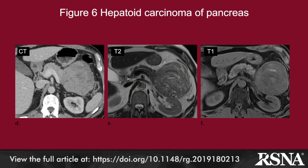Hepatoid carcinoma is an extremely rare and aggressive extrahepatic pancreatic epithelial malignancy that resembles HCC morphologically and immunohistochemically. The tumor is typically exophytic, well-delineated, and hypoattenuating at CT, showing hyperenhancement during the arterial phase with washout in the portal venous phase and diffusion restriction.